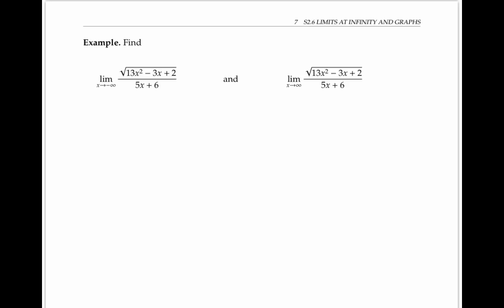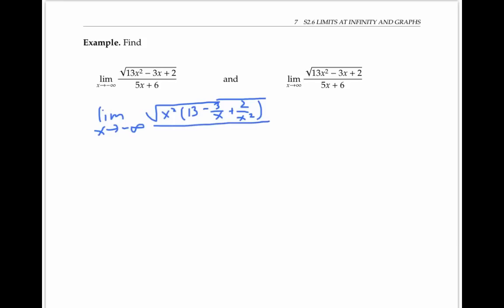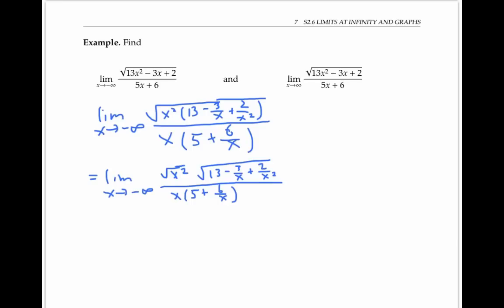Let's look at a slightly trickier example: the limit as x goes to negative infinity of the square root of thirteen x squared minus three x plus two, divided by five x plus six, and the limit as x goes to infinity of the same quantity. We can try to factor out highest power terms. Inside the square root, the highest power is x squared, and on the denominator, the highest power is x. Splitting up the square root into two factors — which is okay since both factors inside the square root are positive — I can rewrite the square root of x squared as the absolute value of x. I need the absolute value sign because the square root of x squared is positive, but x itself is negative as x tends to negative infinity.